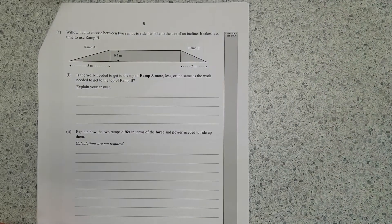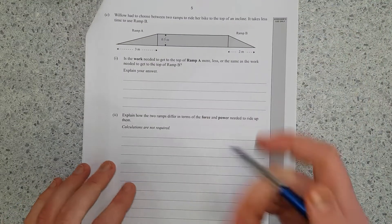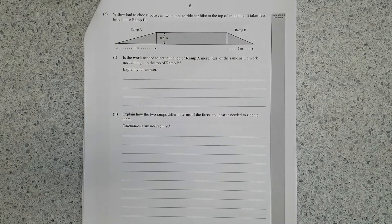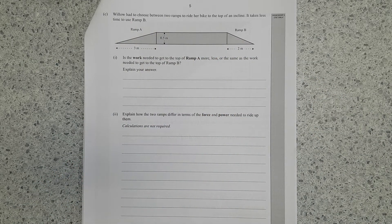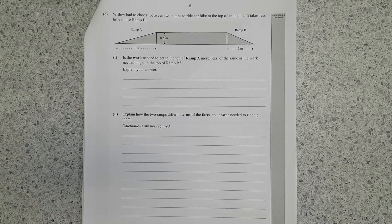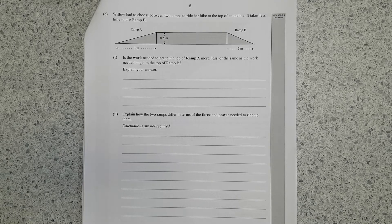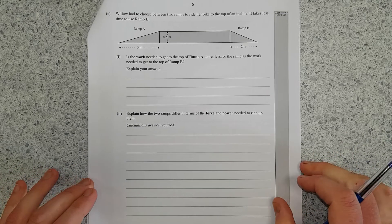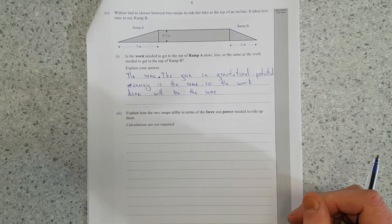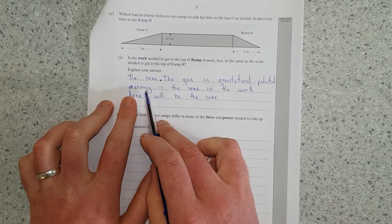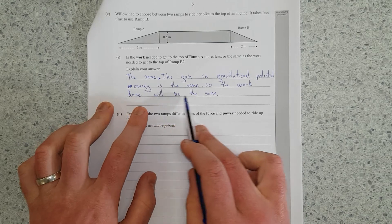Willow had to choose between two ramps to ride her bike up to an incline. It takes less time to use ramp B. Is the work needed to get to the top of ramp A more or less, or the same as work needed to get to the top of ramp B? Explain your answer. I'll pause, write the answer, and then discuss. Right, so I've said the same. The gain in gravitational potential energy is the same, so the work done will be the same.